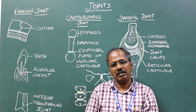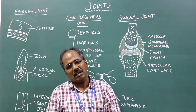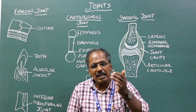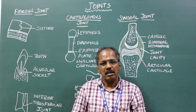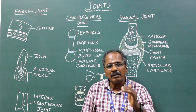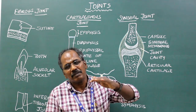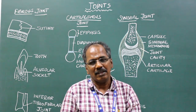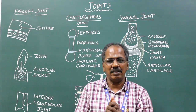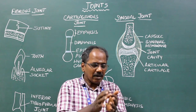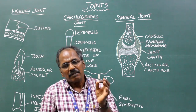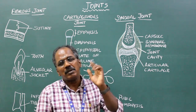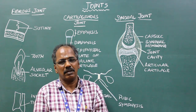Ellipsoid variety. In this type of joint, one of the convex elliptical surfaces articulates with the concave elliptical surface of the other bone. Examples include the wrist joint, first metacarpophalangeal joint, first metatarsophalangeal joint, and atlantooccipital joint.